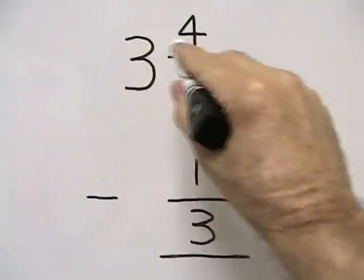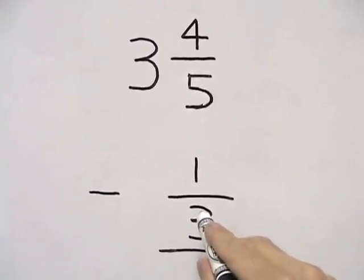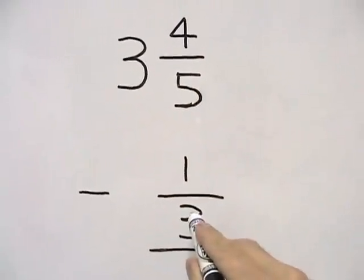Our problem is three and four-fifths minus one-third. What we're doing is taking a mixed number and subtracting a proper fraction.